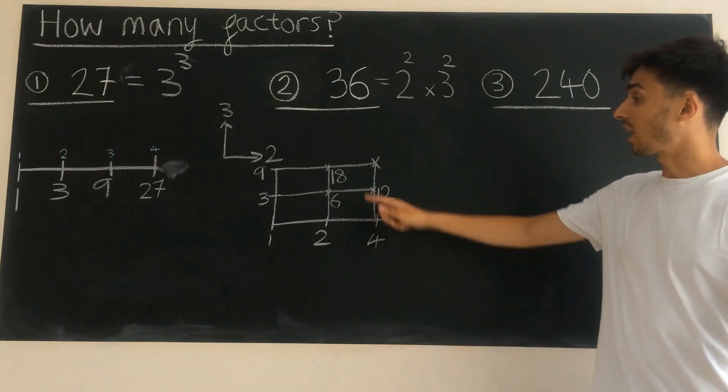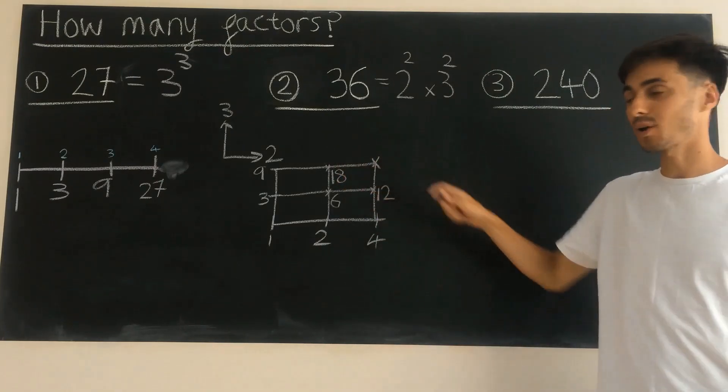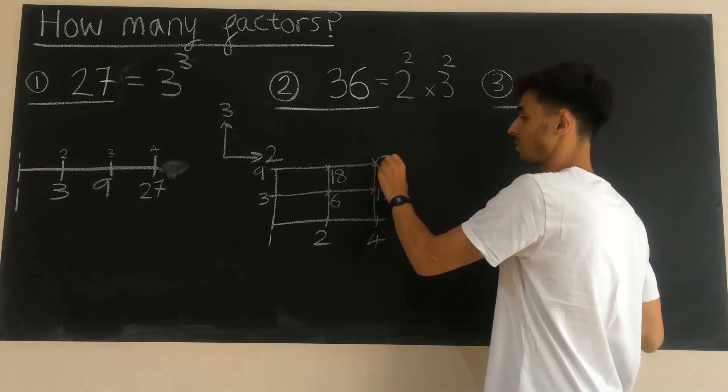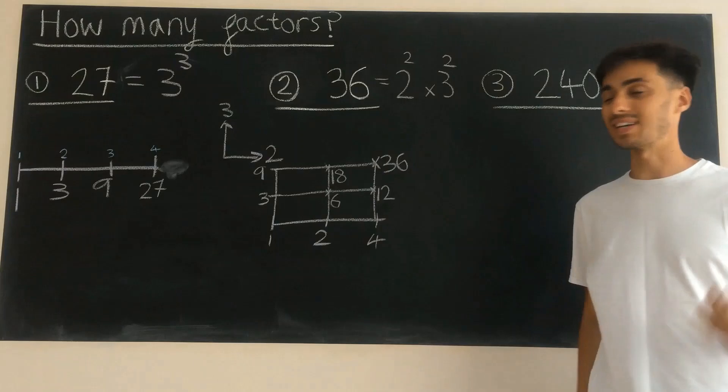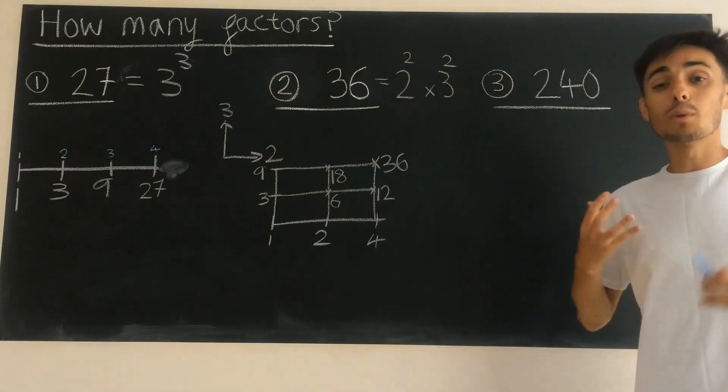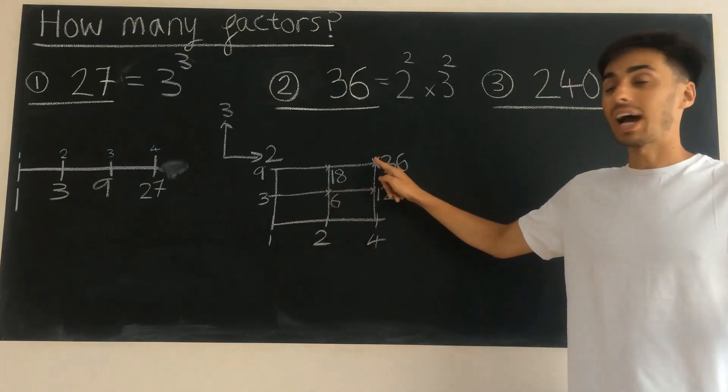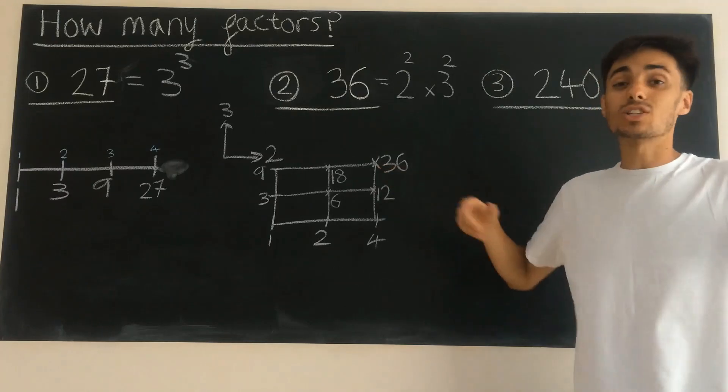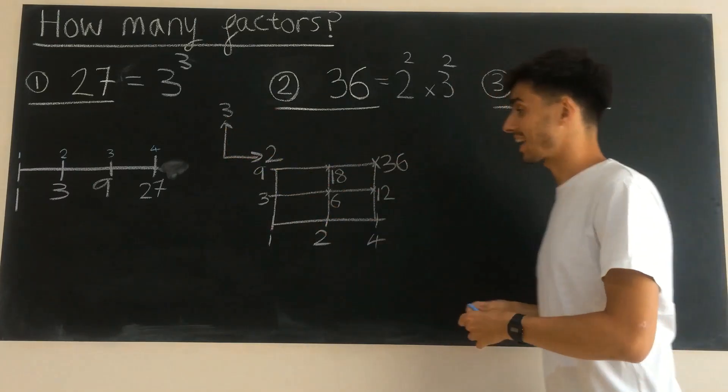And then lastly, I could either do 18 times by 2, so I'm moving to the right one to get 36, or I could have done 12 multiplied by 3 to get 36. What's cool for us is that it's completely path independent. You can go whichever path you feel like, and you'll get to 36, as long as you follow the rules of times by 2 and times by 3 on those axes.